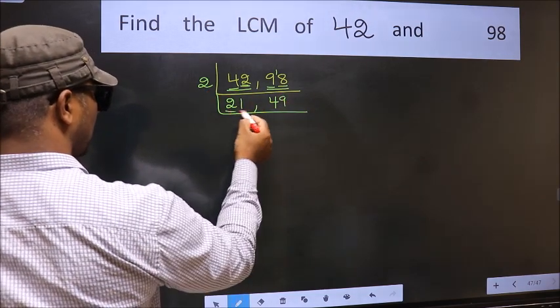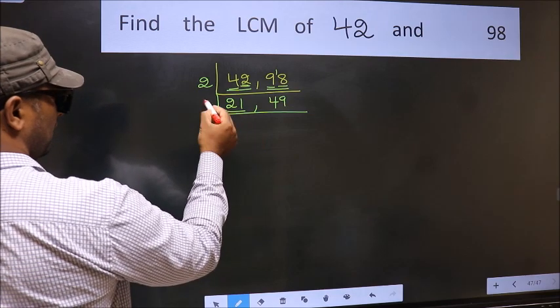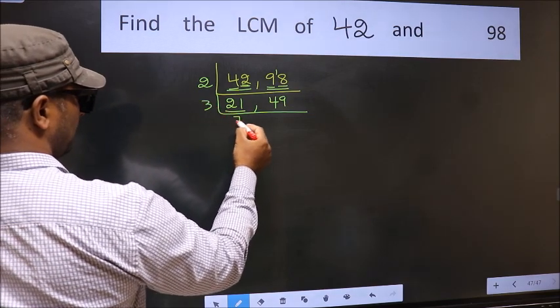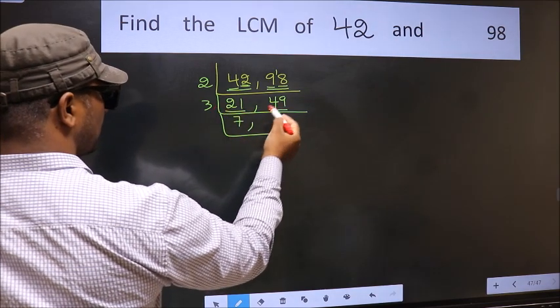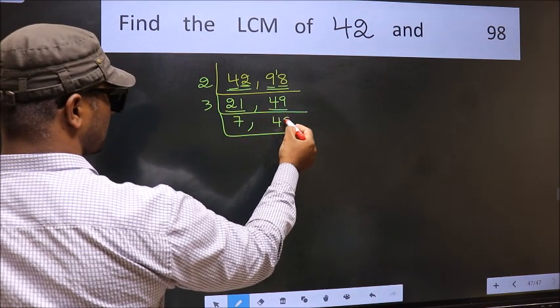Now here we have 21. 21 is 3 times 7 is 21. The other number 49, not divisible by 3, so we write it down as it is.